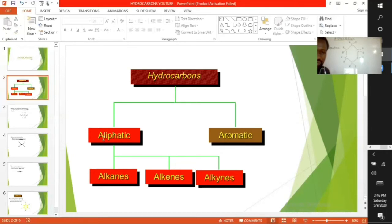Examples of aliphatic hydrocarbons are alkanes, alkenes and alkynes.